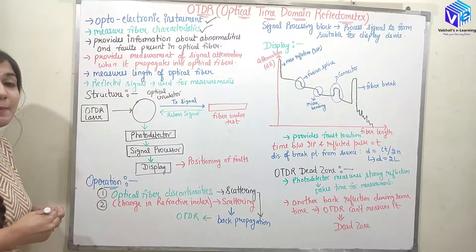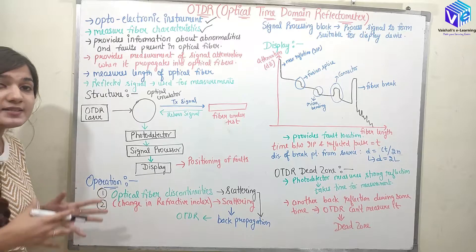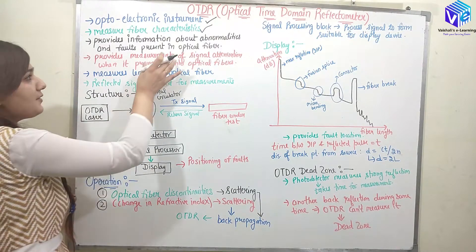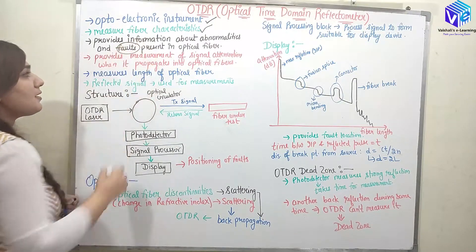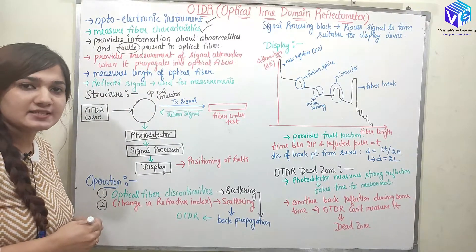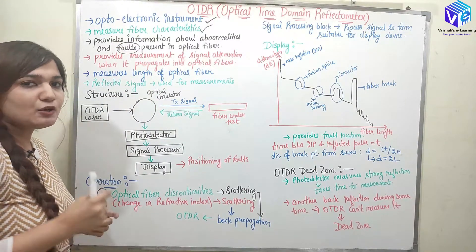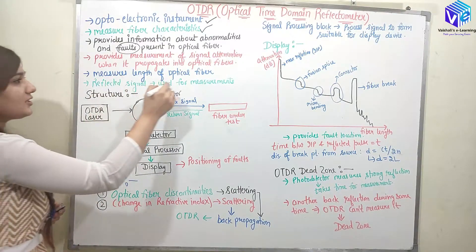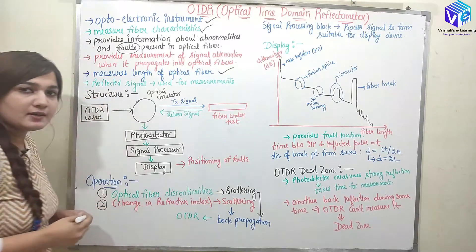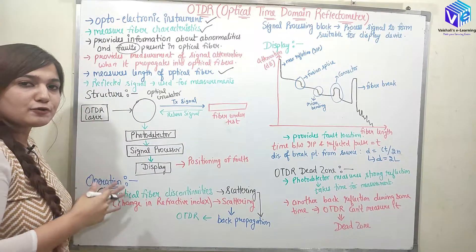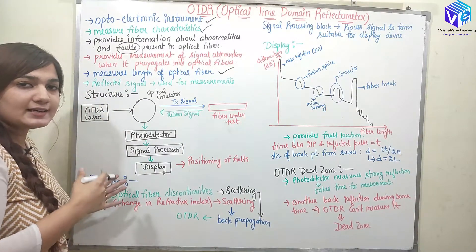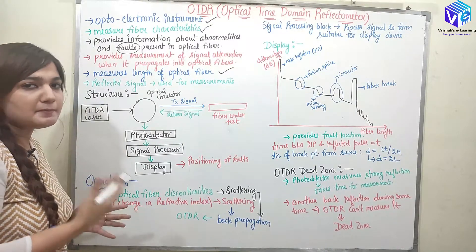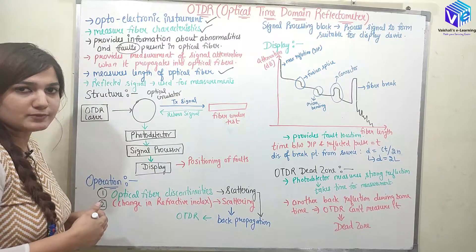It is going to tell us about the various abnormalities present inside the fiber and we can see where the fault is present. The exact location of the fault can be found out. It can also measure the exact length used for a particular transmission with the help of the reflectometer.